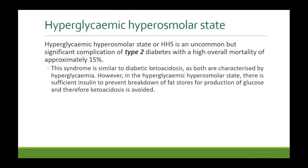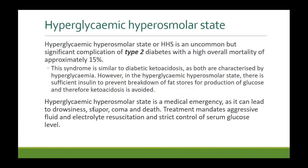The hyperglycemic hyperosmolar state develops in type 2 diabetics. It is uncommon but has a high mortality of 15% if not managed immediately. Similar to DKA, both are characterized by hyperglycemia, but in this condition insulin is still present — the problem is insulin resistance. This insulin prevents breakdown of fat stores, so ketoacidosis is avoided. The main feature is dehydration. It is a medical emergency that can lead to drowsiness, stupor, coma, and death. Treatment requires aggressive fluid and electrolyte resuscitation and strict control of serum glucose levels.